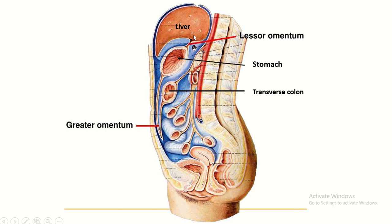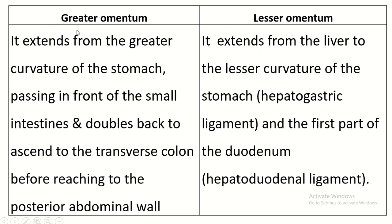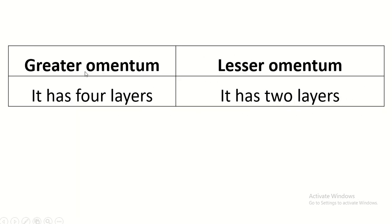This is the liver. This is the greater curvature. This is the greater omentum. The greater omentum extends from the greater curvature of the stomach, passing in front of the small intestine and doubling back to ascend to the transverse colon before reaching the posterior abdominal wall. The lesser omentum extends from the liver to the lesser curvature of the stomach and the first part of the duodenum. The greater omentum has four layers and the lesser omentum has two layers.